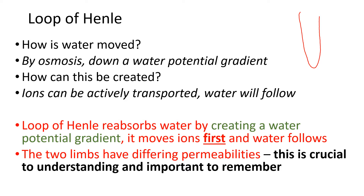The problem is that when we learn the Loop of Henle, it's not in order - we start on one side rather than following the fluid around. We have to focus on one part first and then the rest follows. So remember: it doesn't go in the way that the fluid flows through the loop. You've got to remember the different permeabilities and then you'll be fine.